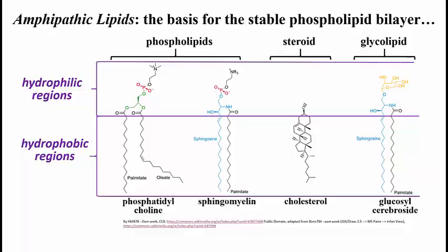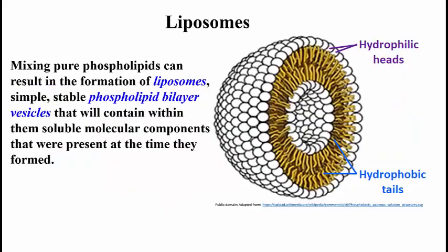If you isolate pure phospholipids from cells or buy them off the shelf, you can mix them and cause them to form spontaneous phospholipid bilayer vesicles called liposomes. Here's a picture of a liposome — the cartoon emphasizes the phospholipid bilayer structure of liposomes.